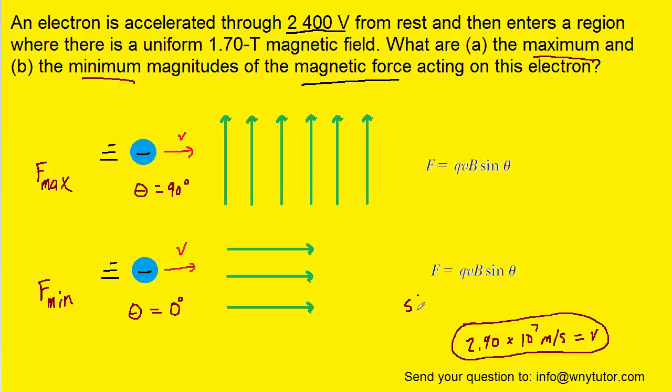In fact, it's worth noting that the sine of 0 degrees is equal to 0. So if we plug in 0 degrees in for the angle, this entire term is going to multiply out to just 0. So indeed, the minimum force will simply be 0 newtons. And that's the correct answer to part B.